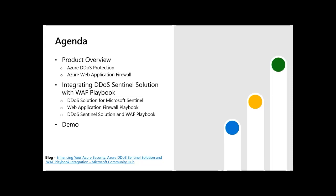The plan is to integrate the DDoS Sentinel solution. We will use our log analytics, look at what's occurring in our log analytics workspace, and then use the Sentinel solution and the WAF playbook to create an action based on what we found. The first part will be the DDoS response to a DDoS attack, and then we'll use WAF to create an action based on what DDoS has found. The second part is integrating the DDoS Sentinel solution with the WAF playbook.